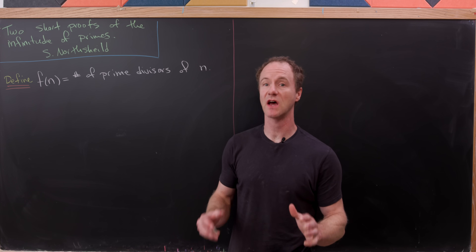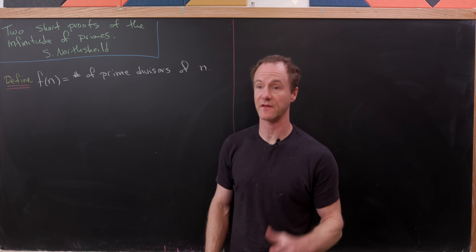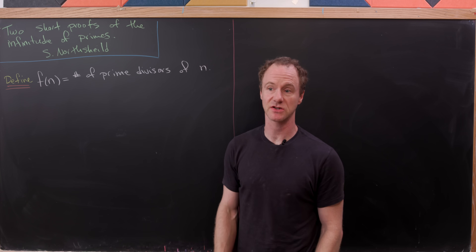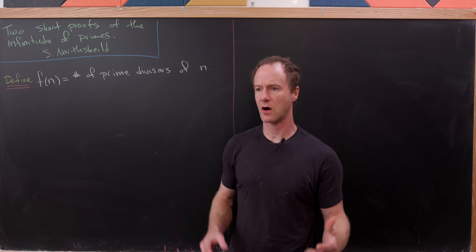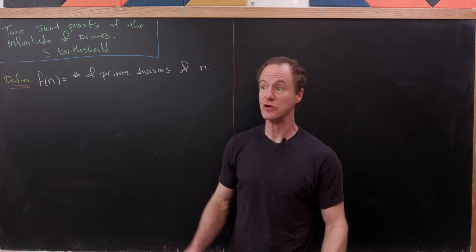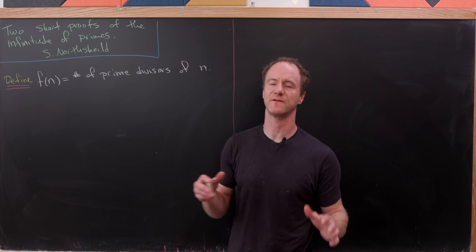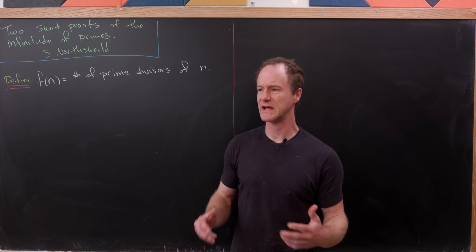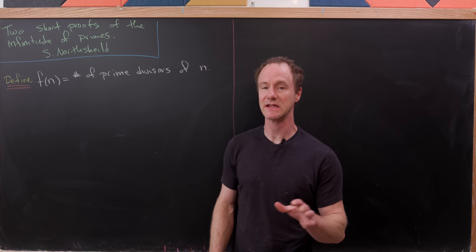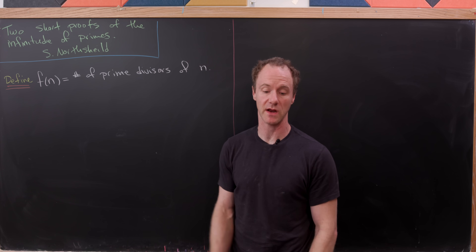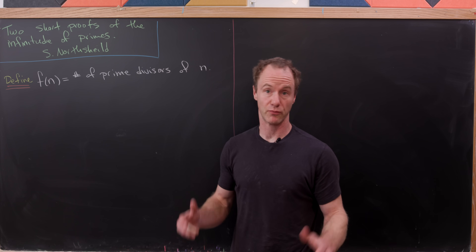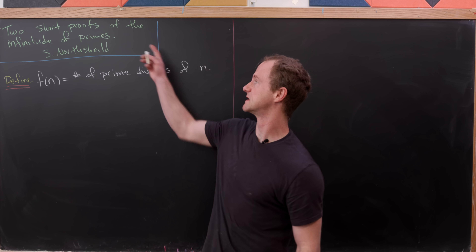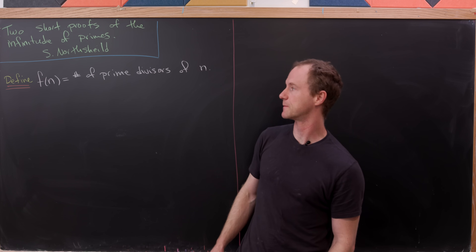Mathematicians have a ton of proofs that there are infinitely many primes, and today I'd like to look at two of them that are kind of new to me. One has a flavor of something we've done on the channel before but presented a little differently, and the other is brand new to me — it comes from a paper I recently found.